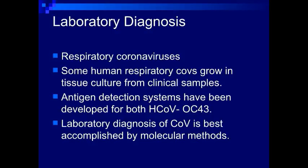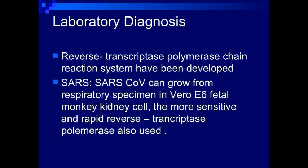Laboratory diagnosis. Some human respiratory coronaviruses grow in tissue culture from clinical samples. Antigen detection systems have been developed for human coronavirus OC43. Laboratory diagnosis of coronavirus is best accomplished by molecular methods. Reverse transcriptase polymerase chain reaction systems have been developed. SARS coronavirus can be grown from respiratory specimens in Vero E6 fetal monkey kidney cells. The more sensitive reverse transcriptase PCR is also used.